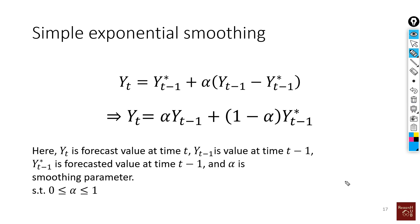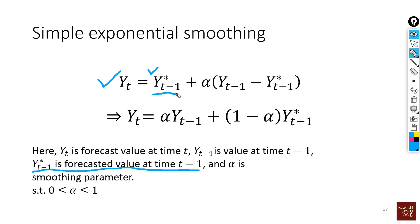Let's look at the simple exponential smoothing method. The forecast value of any time series should be based on the previous forecasted value — by y-star we mean that is the forecasted value at time t minus 1. This is the forecasted value, not the previous actual value itself, and that's the key difference from previous methods.